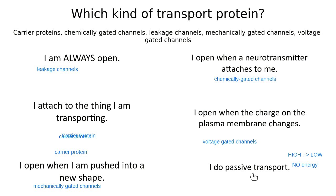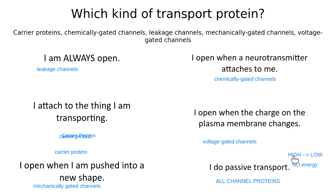All of my types of channel proteins do facilitated diffusion. So all channel proteins take things from high concentration to low concentration, which means they don't need energy. All of my channel proteins work that way — whether they're a leakage channel that's always open or whether there's some kind of gated channel that needs help getting open. Anytime we talk about a channel protein, it can only take things from where there's a high concentration to where there's a low concentration. Channel proteins only ever do passive transport.